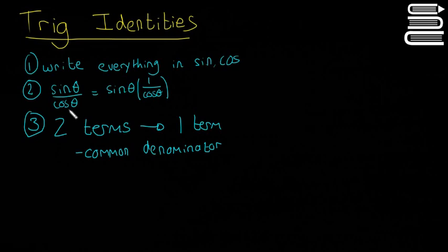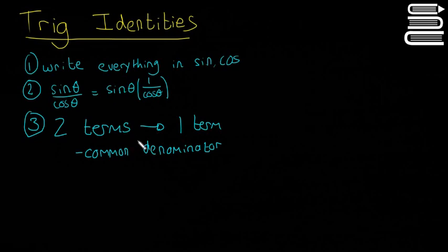You can write things like sine theta over cos theta in the form sine theta multiplied by 1 over cos theta — that can make things easier. And if you want to turn two terms into one, you have to look for a common denominator. That's the same if you want to turn one term into two — you have to use the common denominator as well. Hopefully these all make sense when we look at some examples.